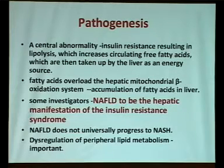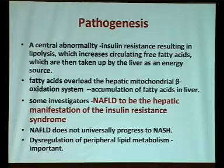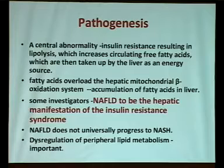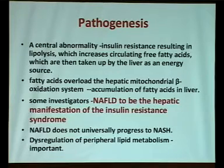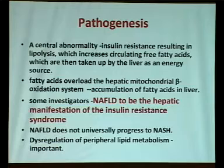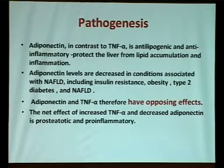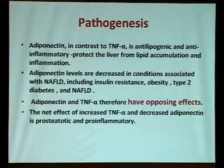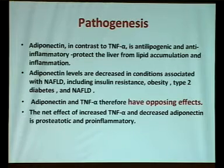The central abnormality in the pathogenesis of fatty liver and NAFLD is insulin resistance. Insulin resistance leads to hyperinsulinemia, which creates an imbalance between cytokines: the protective cytokine adiponectin is decreased, while the destructive cytokine TNF-alpha is elevated. This leads to fatty acid overload to the hepatic mitochondrial system and accumulation of fatty acids in the liver. Adiponectin is anti-lipogenic and anti-inflammatory, protecting the liver from lipid accumulation and inflammation. Adiponectin levels are low and TNF-alpha levels are high in patients with NAFLD.